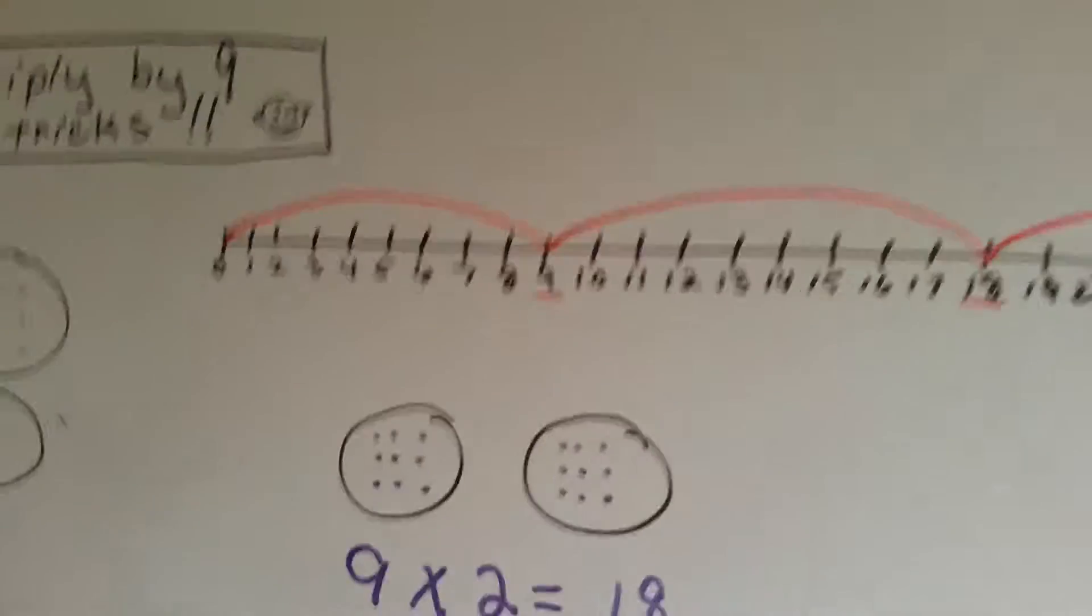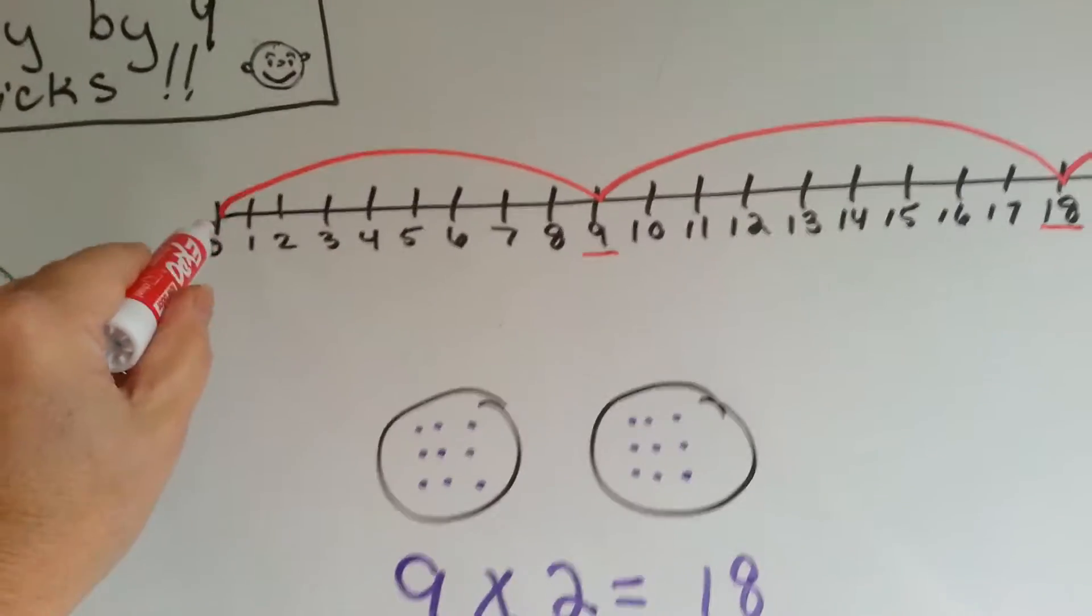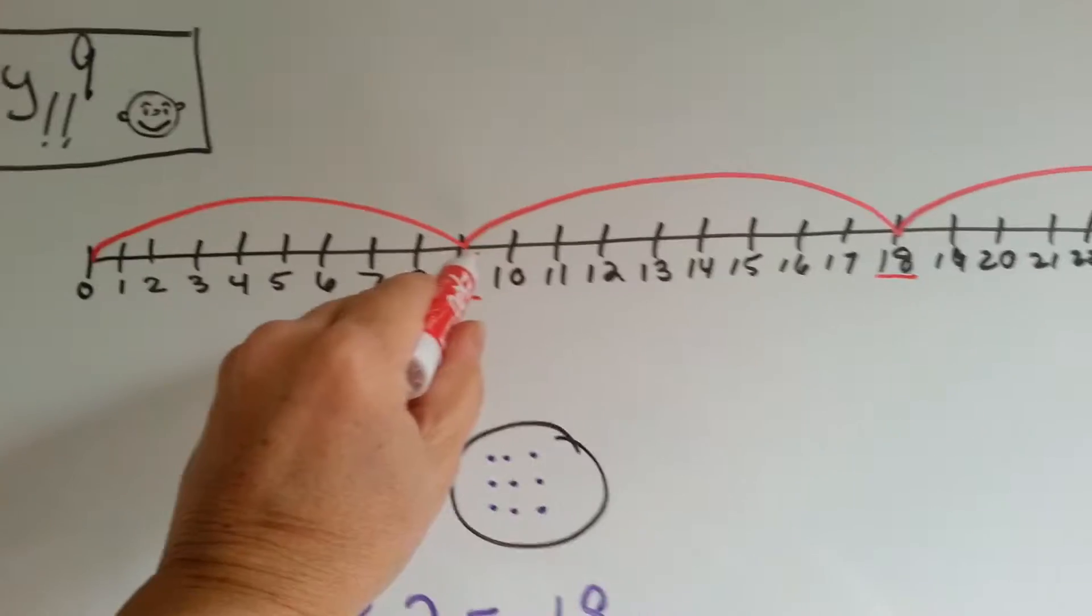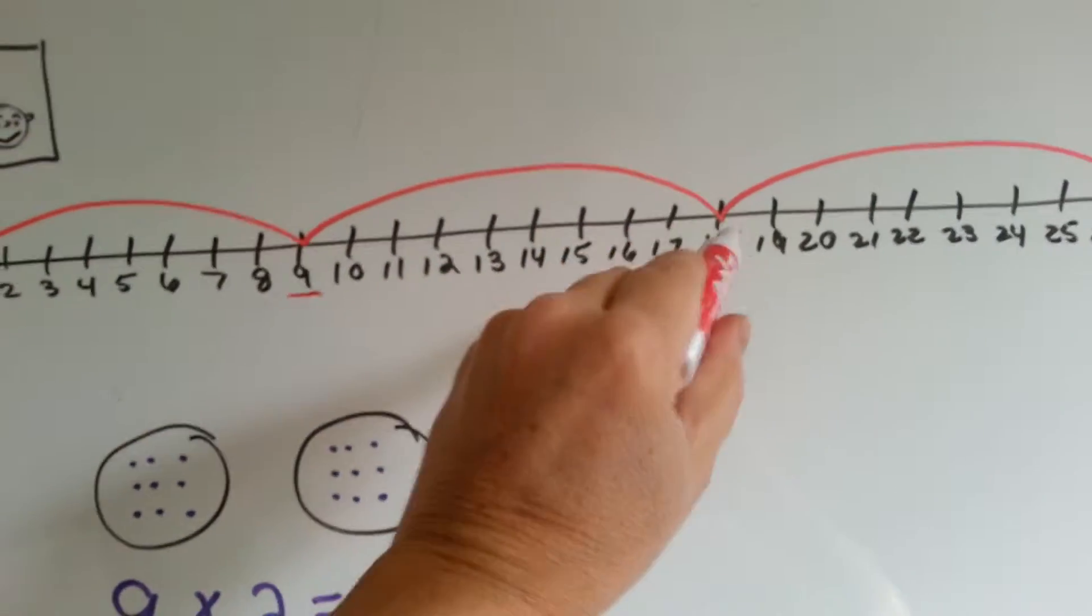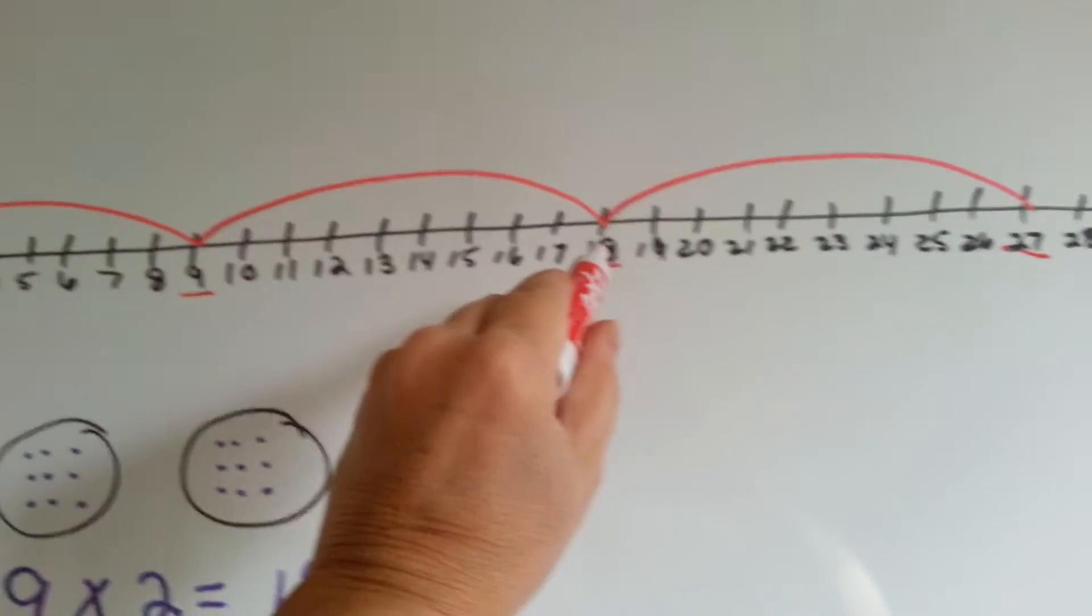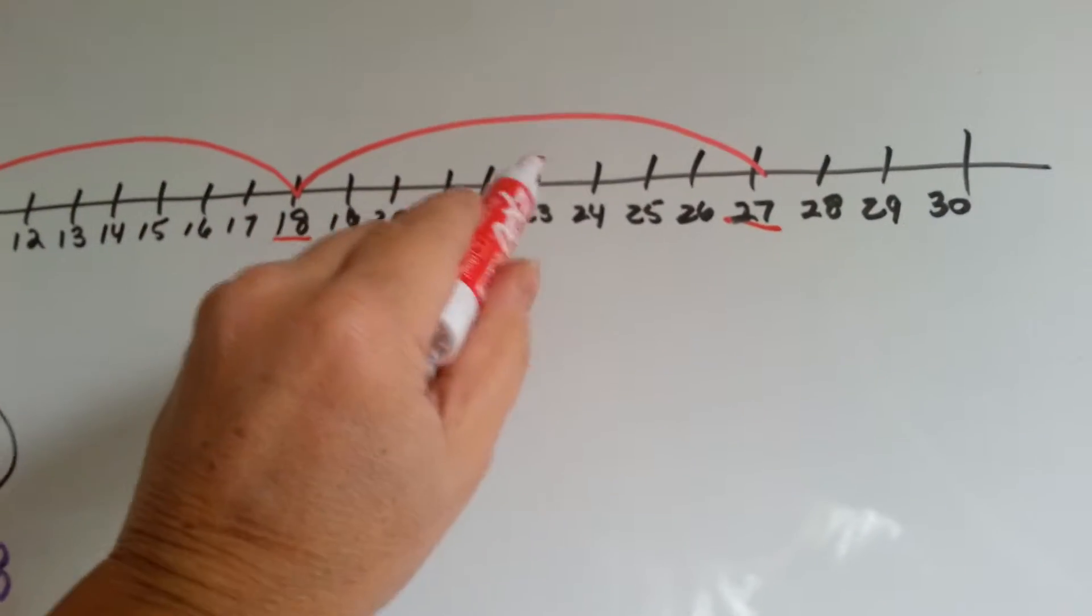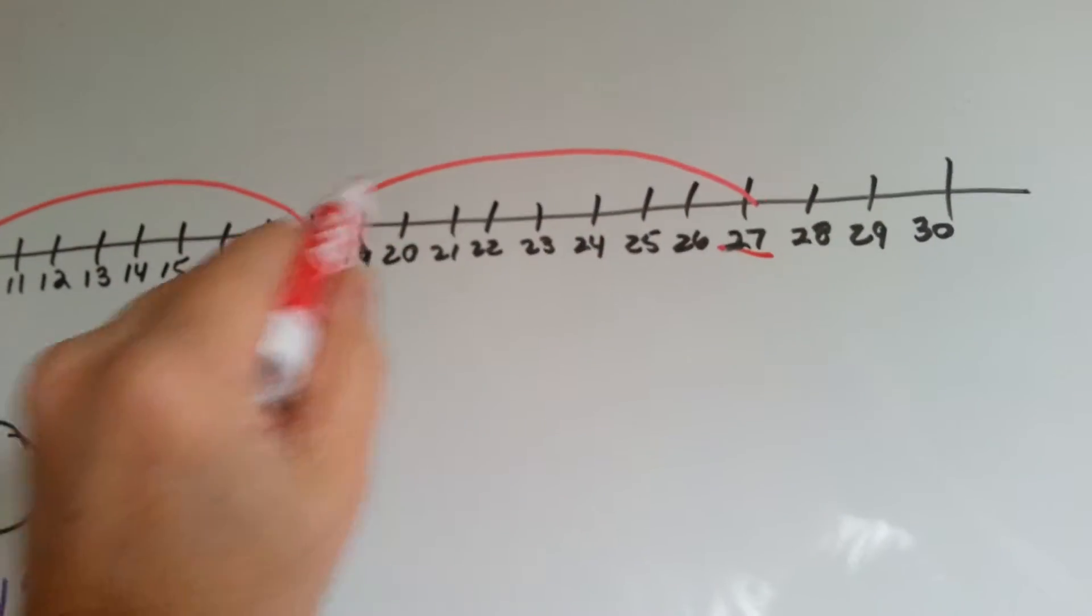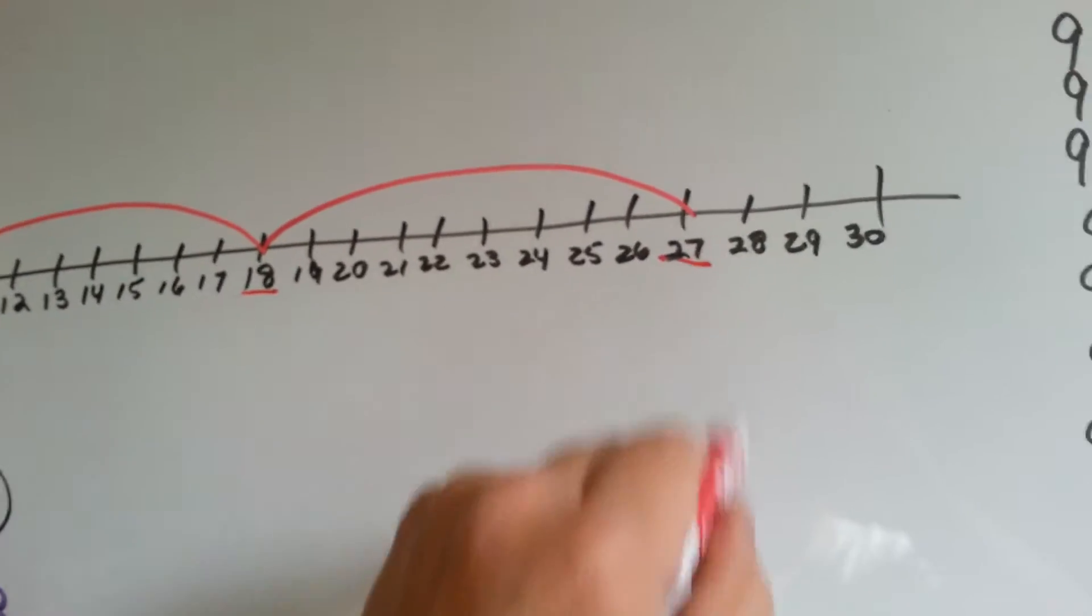So, let's look at skip counting by 9s. You would start with 0 and the very first number you would jump to is 9. Then you would count 9 more. 1, 2, 3, 4, 5, 6, 7, 8, 9. So, 18 would be the next one. That's a 2 and a 7.